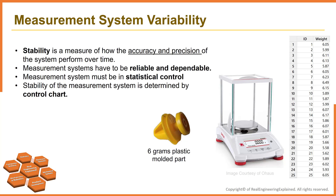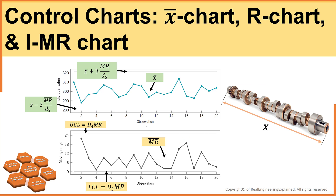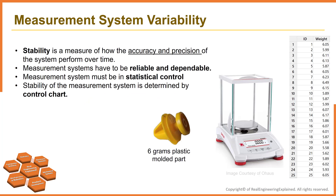Stability is a measure of how the accuracy and precision of the system perform over time. How do we provide measurements that are reliable and meaningful? We rely on measurements to tell us when our process is operating correctly, when there is a problem, or when we have made an improvement. Measurement systems must be in statistical control, and their stability is determined by a control chart. To learn more about control charts, I suggest you watch this video, where we discuss the X-bar chart, R chart, and IMR chart, and practically understand the concept of keeping the process in control.